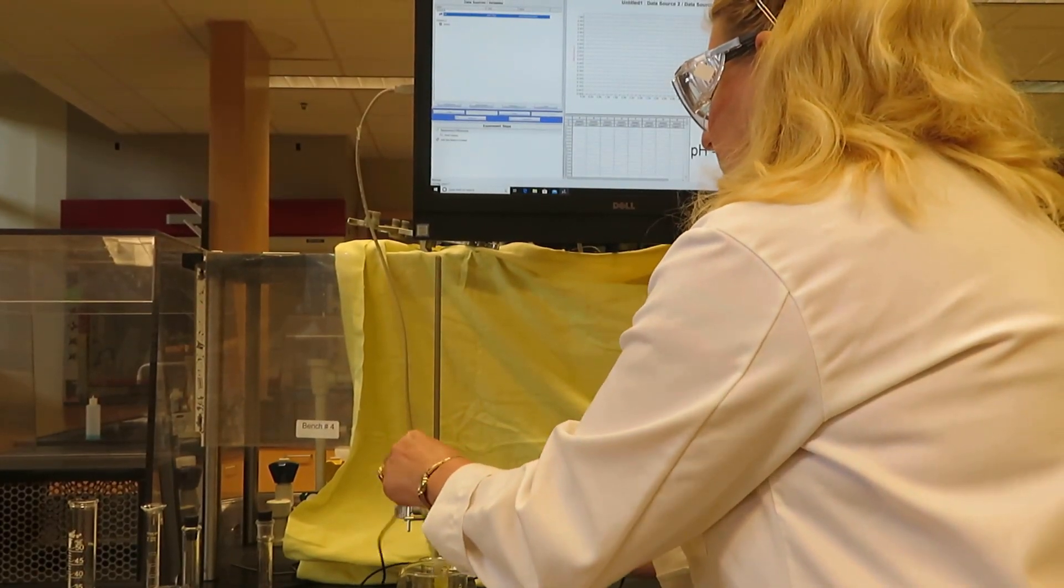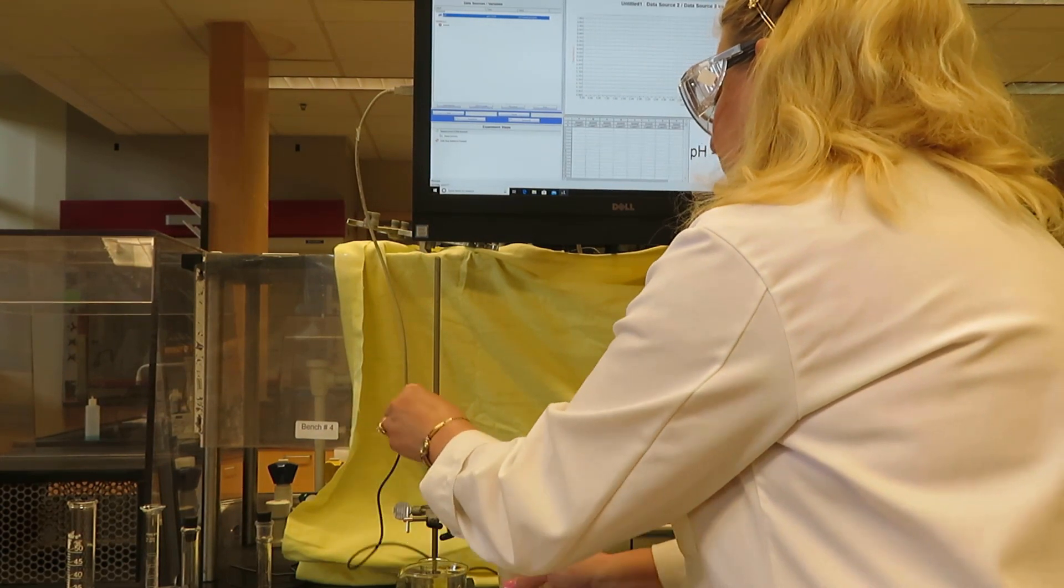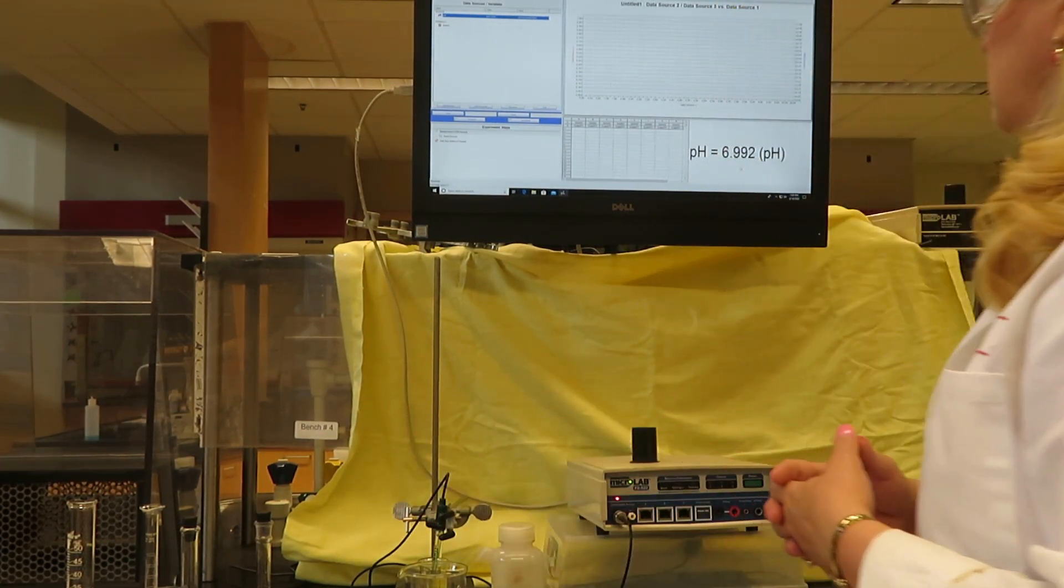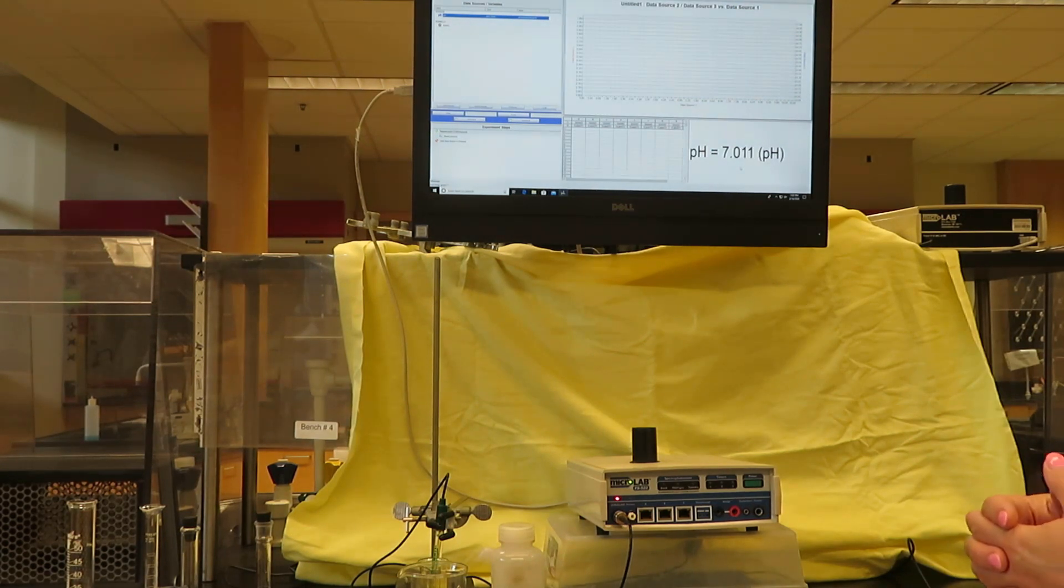Now let's try our pH 7 solution. Give it a minute to stabilize. It seems to be stable at 7.025.